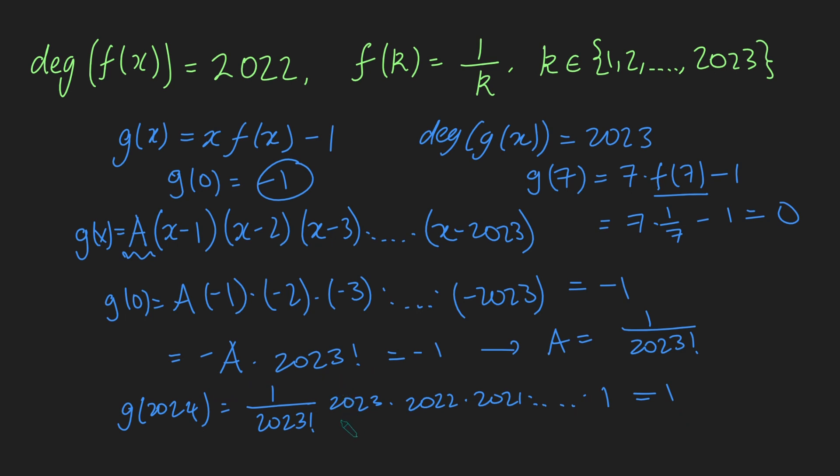Perfect. g of 2024 is 1. Let's now bring that back up here. So, we get that g of 2024, which is 2024 times f of 2024 minus 1, equals 1. So, adding 1 to both sides and then dividing by 2024, we get that f of 2024 must be 1 over 1012.